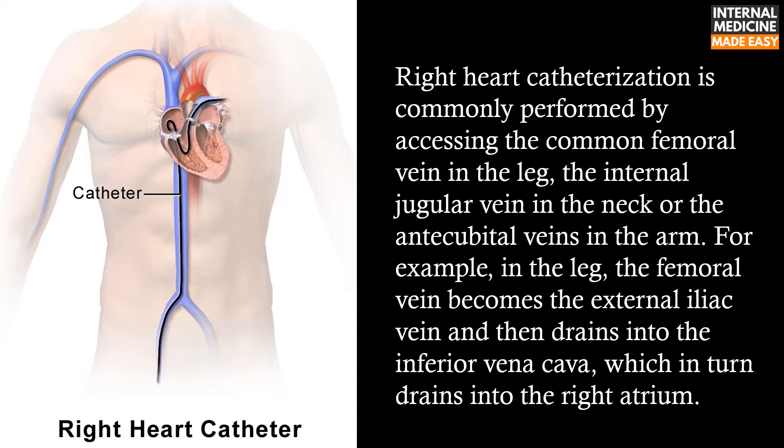Right heart catheterization is commonly performed by accessing the common femoral vein in the leg, the internal jugular vein in the neck, or the antecubital veins in the arm. For example, in the leg the femoral vein becomes the external iliac vein and then drains into the inferior vena cava, which in turn drains into the right atrium.